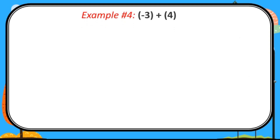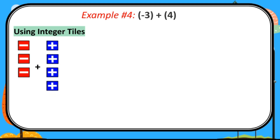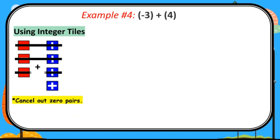Example number 4: negative 3 plus positive 4. As we can observe again, the signs are different. Using integer tiles, we need negative or red tiles for negative 3: 1, 2, and 3. Plus, we need blue or positive tiles for positive 4: 1, 2, 3, and 4. Then cancel out zero pairs — we cancel the paired negative and positive tiles: 1, 2, and 3 pairs, because they equal zero. The remaining tile is one positive or blue tile. Therefore, negative 3 plus positive 4 equals positive 1.